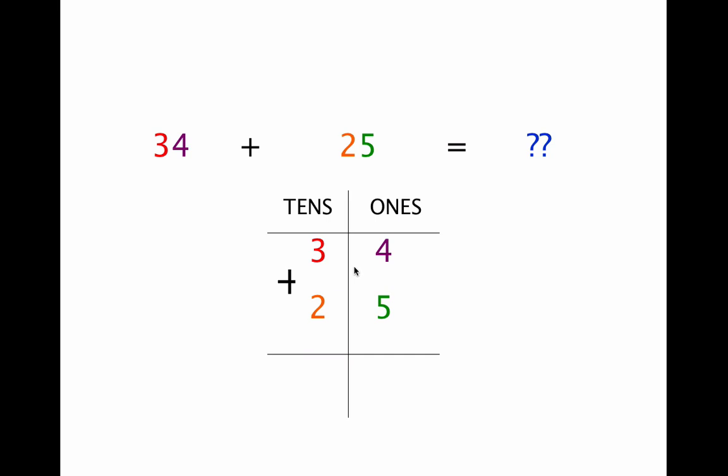Remember, we should always add our ones first. If you have trouble remembering that, try using this rhyme. First you add the ones, they're on the right you know. Then you add the tens, and on and on you go. So, let's add the numbers in the ones column. 4 plus 5 equals 9. So we write 9. Now we add the numbers in our tens column. 3 plus 2 is 5. So we write a 5. And that gives us our sum, 59.